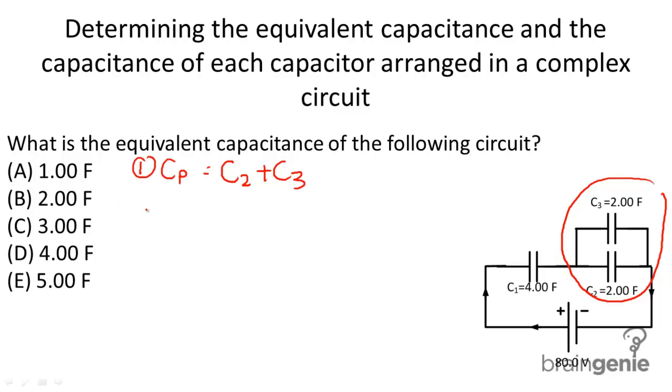After we've found the equivalent capacitance of the parallel portion, we're going to then determine the total capacitance of the entire circuit. And that's going to be given by the equation 1 over Cs equals 1 over Cp plus 1 over C1.